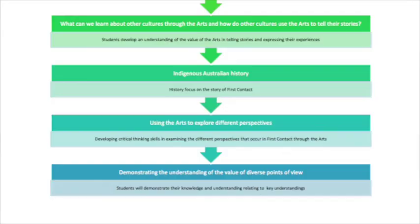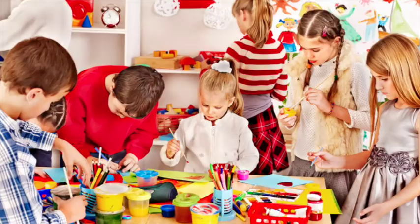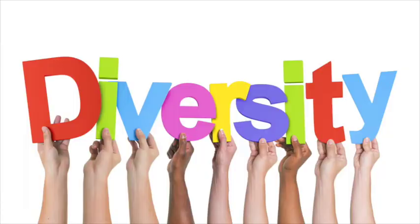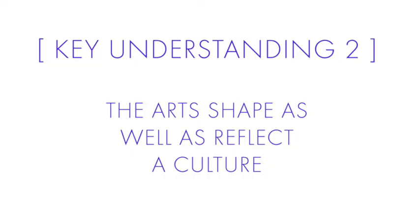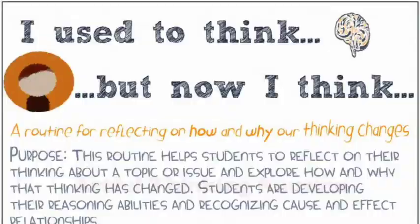At the end of the unit, students have looked through the eyes of different cultures and events through history, literacy and the arts. At this stage, students need to demonstrate their understanding of the value of diverse points of view and that they have achieved the key understandings. To assess this, a visible thinking routine — I Used to Think, Now I Know — will be used. This routine helps students reflect on their thinking about a topic and gives them an opportunity to identify how their learning has changed over time, confronting their own misconceptions and seeing value in what they've learnt.